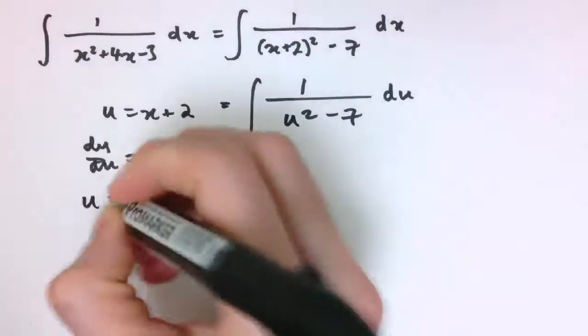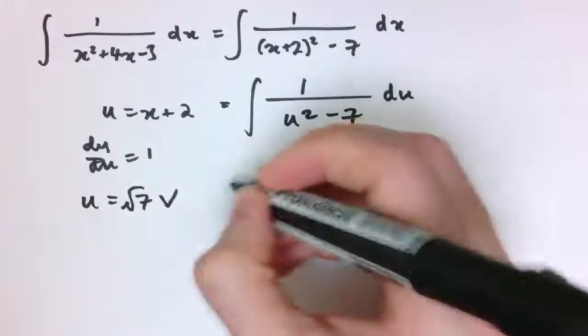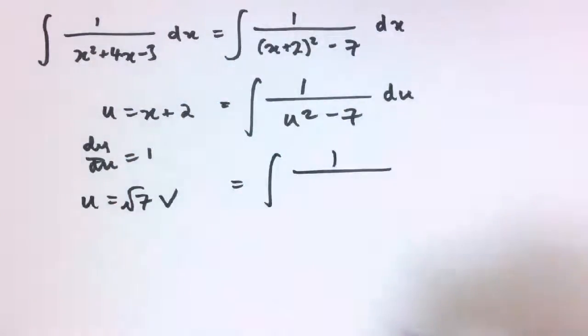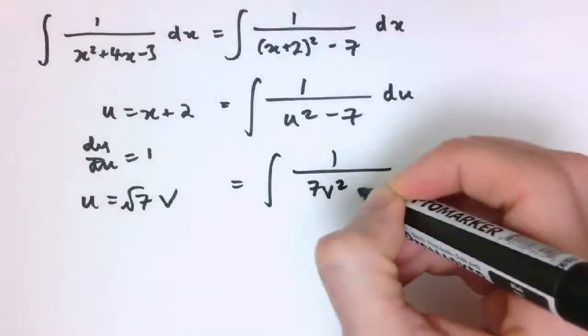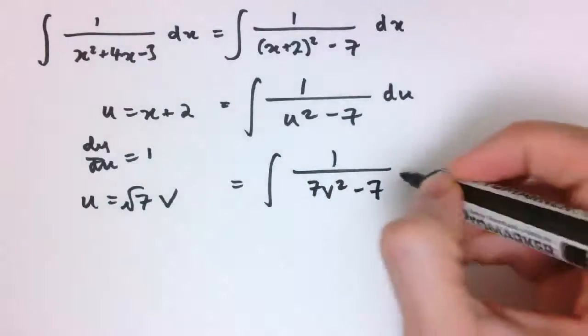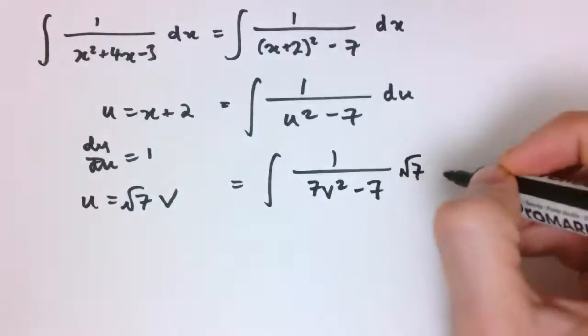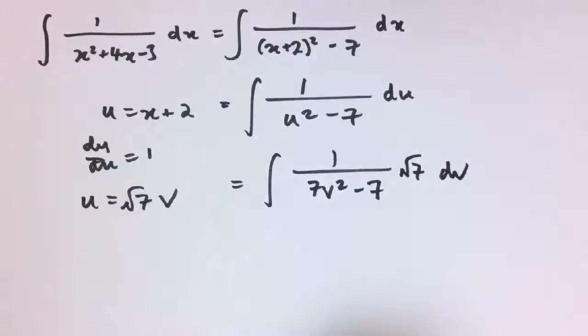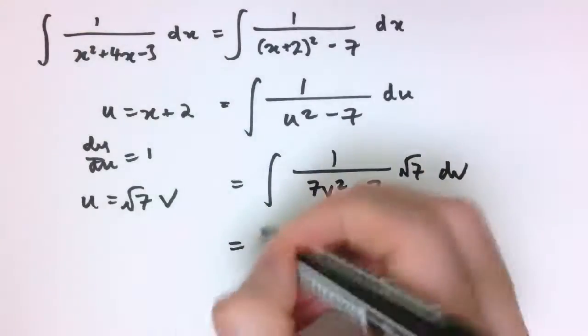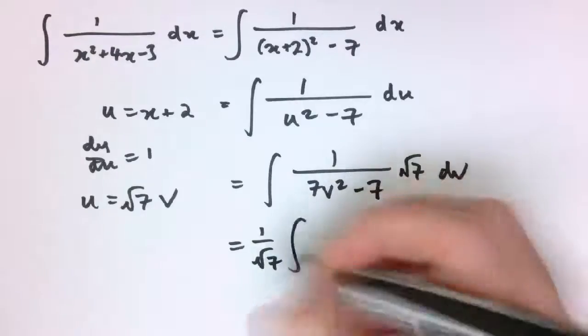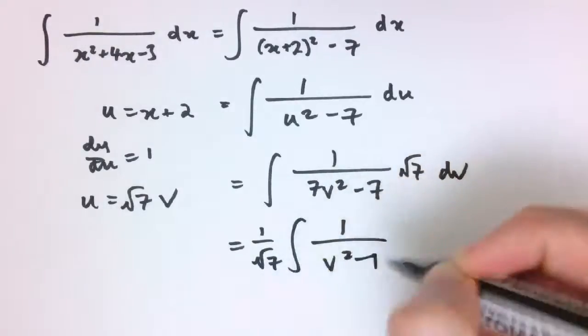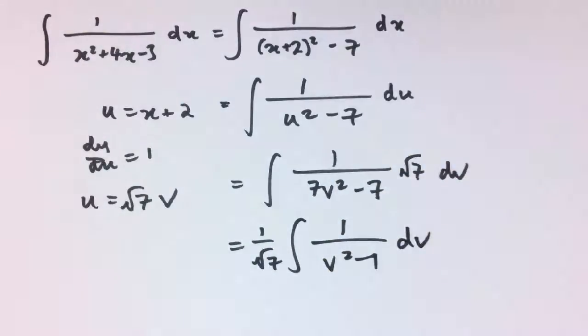And then if we say u equals the square root of 7 times v, then this gives us 1 over 7 v squared minus 7 times the square root of 7 dv, which is 1 over the square root of 7 times the integral of 1 over v squared minus 1 dv. So it's basically the same as what we did before, except I've got this minus instead of a plus here.